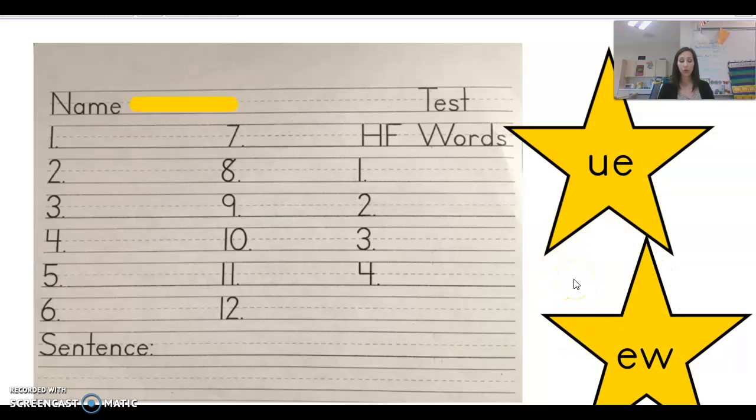And just a reminder that long U can make the U sound, and it can also make the OO sound. All right, so if you want to grab your blank spelling test paper, put your first and last name on it, and we will go ahead and start with number one. And again, we will start with the U-E words first.